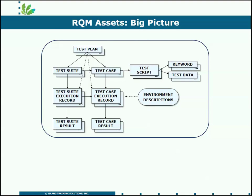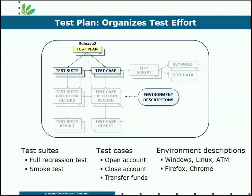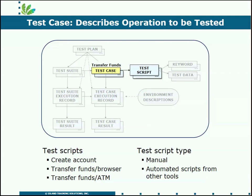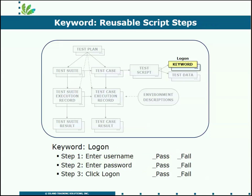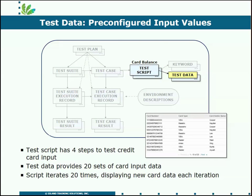Let's review where we went so far. We started by looking at test plans. The test plan is the overall umbrella to gather test suites and test cases for a particular release, and it also lays out the different environment descriptions in which you must test the application. The test case describes one piece of functionality that needs to be tested, and it is implemented by a test script. That test script can be an automated script authored in one of the test automation tools, or it can be a manual test script authored directly in RQM. If it's a manual test script, you have both keywords and test data to help implement that test script as efficiently as possible. This is the test construction phase — setting up all of the test cases you need for testing the entire application.